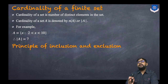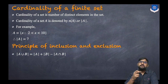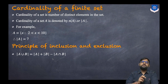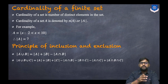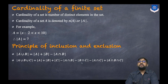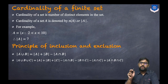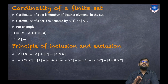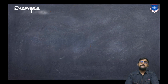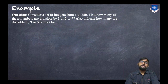Now let us discuss the important topic: the principle of inclusion and exclusion. For two sets: |A ∪ B| = |A| + |B| − |A ∩ B|. For three sets: |A ∪ B ∪ C| = |A| + |B| + |C| − |A ∩ B| − |A ∩ C| − |B ∩ C| + |A ∩ B ∩ C|. It is called inclusion-exclusion because we include some portions and exclude others alternately.